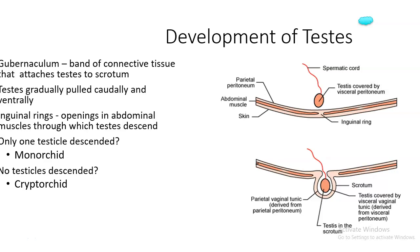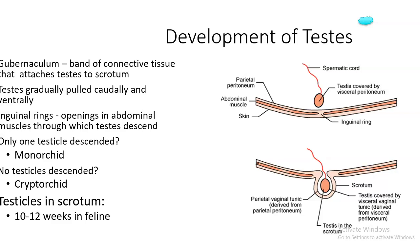Best practice is to use ultrasound to locate missing testicles prior to surgery. Testicles should be in the scrotum between 10–12 weeks in the feline and around 12 weeks in the canine. If they haven't descended by 12 weeks, bring the animal back in a couple of weeks and have the doctor feel and assess.